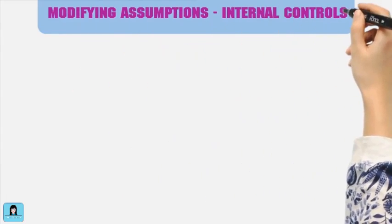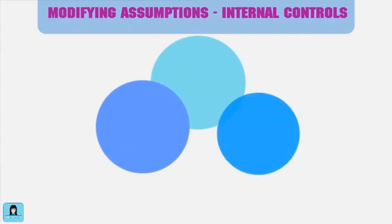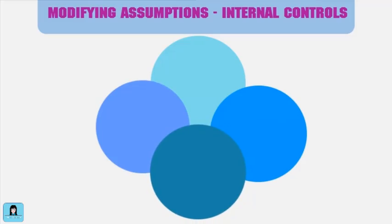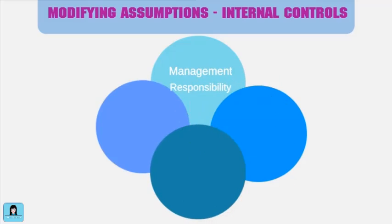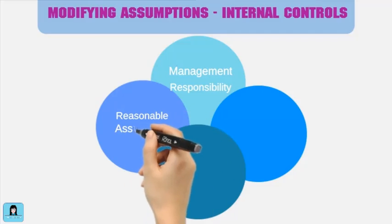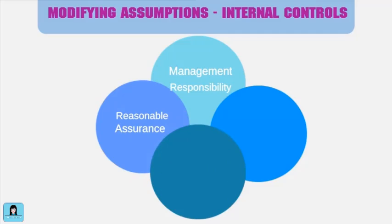Designers and auditors of internal controls are guided by four modifying assumptions inherent in the control objectives mentioned earlier. The first modifying assumption is that the establishment and maintenance of a system of internal control is a management responsibility. The second assumption is that the internal control system should provide reasonable assurance that the four broad objectives of internal control are met in a cost-effective manner. This means that no system of internal control is perfect, and the cost of achieving improved control should not outweigh its benefits.